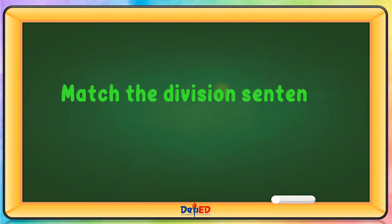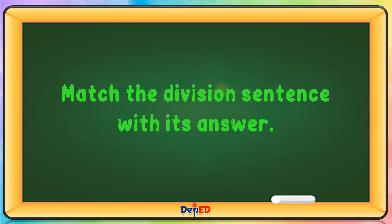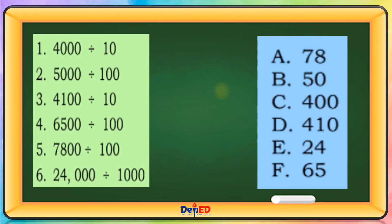Match the division sentence with its number answer. 4,000 divided by 10 is letter C. 5,000 divided by 100 is letter B. 4,100 divided by 10 equals D. 6,500 divided by 100 is letter F. 7,800 divided by 100 is letter A. And 24,000 divided by 1,000 is letter E.